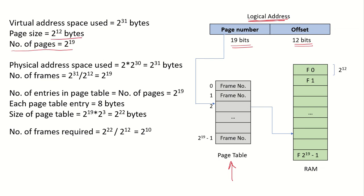The page size is 2^12 bytes, and the page size and frame size are the same. So the offset within a particular page or frame is given by these 12 bits. The physical address space is also given as 2GB, which is 2^31 bytes.